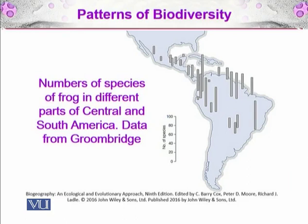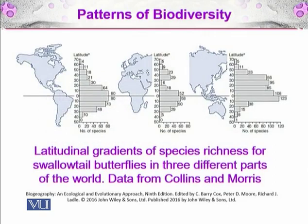Here you can see the number of species of frogs in different parts of Central and South America, with data taken from Groombridge. Towards the tip of Argentina and Chile there are fewer frog species, but in the tropical rainforests of Brazil, Venezuela, Panama, and other Central American regions there is much greater diversity of frogs.